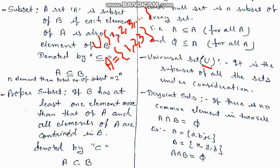Next is disjointed set. Disjointed set means if there is no common element in two sets. That means if we have two sets and there is no common element between them.